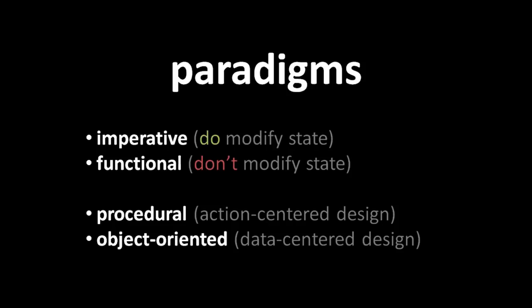The simplest way to think of the distinction between procedural and object-oriented programming is that, in the procedural style, we think in terms of action before data, whereas in the object-oriented style we think in terms of data before action. When programming in the procedural style, a programmer thinks first of what functions they need, and then secondarily thinks about the data types those functions will operate upon. In contrast, when programming in the object-oriented style, the programmer thinks first of what data types they need, and then secondarily thinks about the functions to operate upon those data types. This inversion of priorities really does produce different program structures. Imperative object-oriented code is most common today, but imperative procedural code follows close behind.